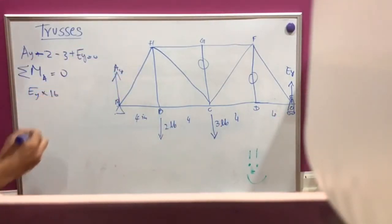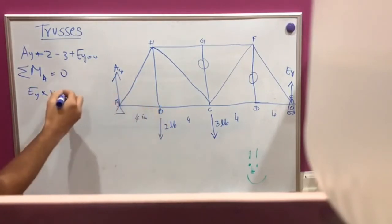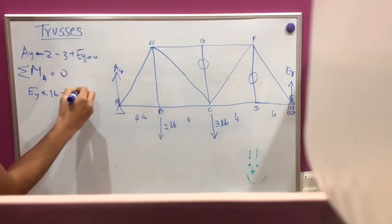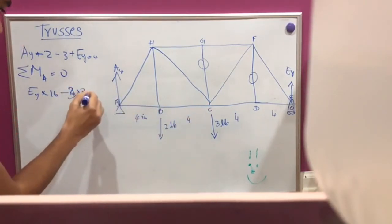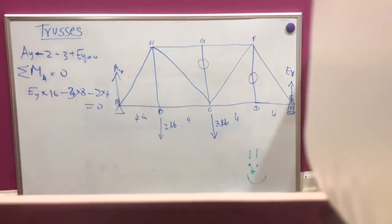I'm sorry, 3OA into 8 minus 2 into 4 has to be zero. And that will be, EY is equal to 24, 32, EY will be 2. And because AY plus EY has to be 5, AY will be 3.